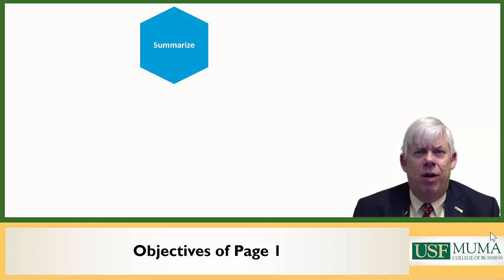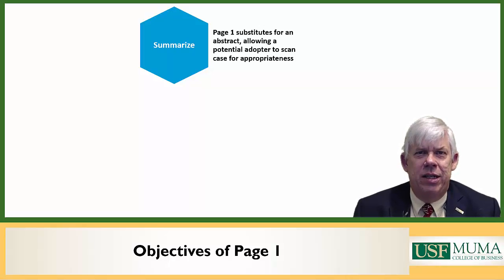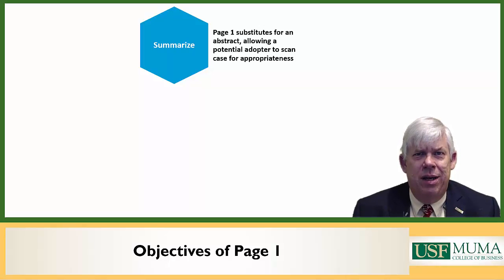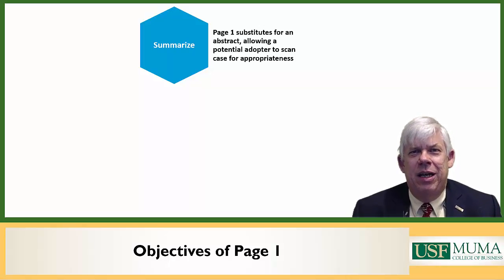The first objective is to summarize the case. This is important because in most cases we don't have an abstract, and instead use the content of page one to give potential adopters of the case a clear idea of what the case is about. Because if you're a faculty member trying to decide whether or not to adopt a particular case for your class, you typically will not want to read the whole 15 or 20 page case only to discover that the decision really doesn't fit your curriculum needs. The first page should make it very clear to the potential adopter whether the case is or is not within the domain of possibility for a class.